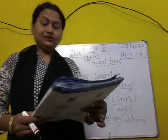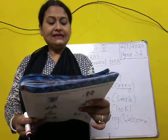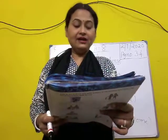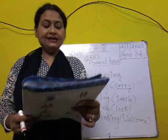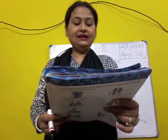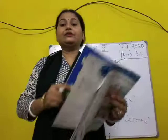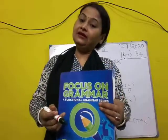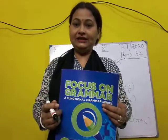Let me read out the completed paragraph once for you. Here is another nice photograph. We are at a wedding. We are wearing our best clothes. My mother is carrying some flowers. Tanya and Tarun are smiling. I am looking into the camera. Aunt Rajini is welcoming my mother. We have completed exercise number 10. Write it neatly in your book and send it for correction. In the next class we will do exercise number 11. I hope you have enjoyed it. Thank you.